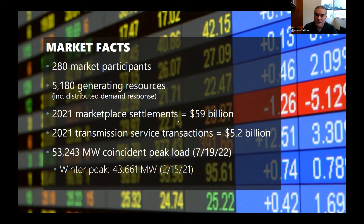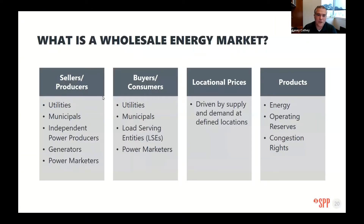This gives an overview of market settlements — it's billions of dollars that we facilitate in a particular operating year. This last heat wave led to a lot of challenges, but we did set a peak at 53.2 gigawatts as of July. The market brings sellers and buyers together. If you're an independent power producer, your business plan is to maximize your output and capacity factor, so you're a seller. Buyers are traditionally load-serving entities, utilities, municipals, and power marketers trying to maximize their revenue while serving load optimally.